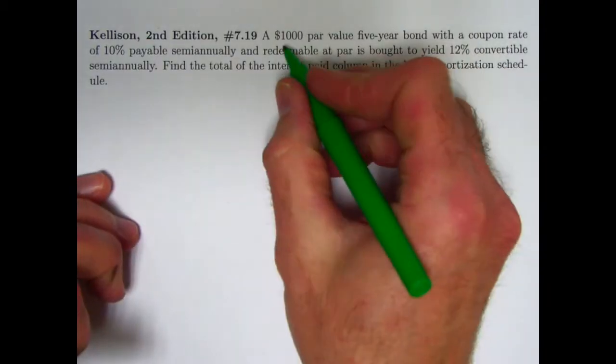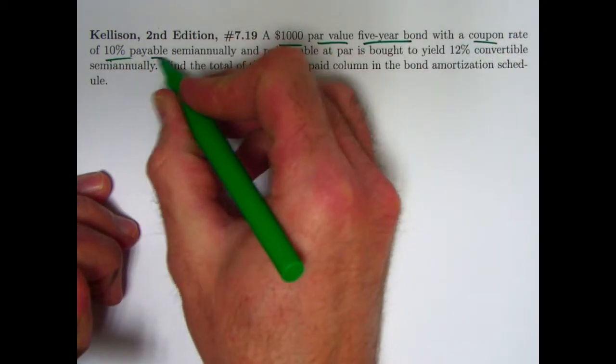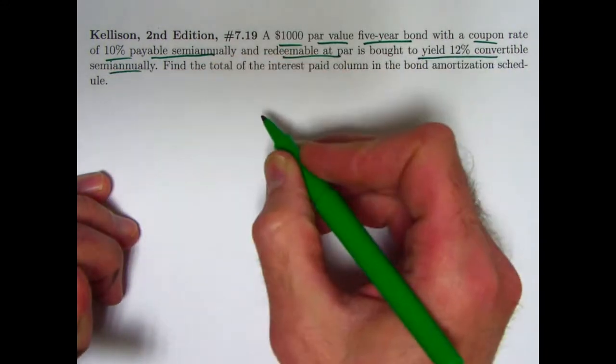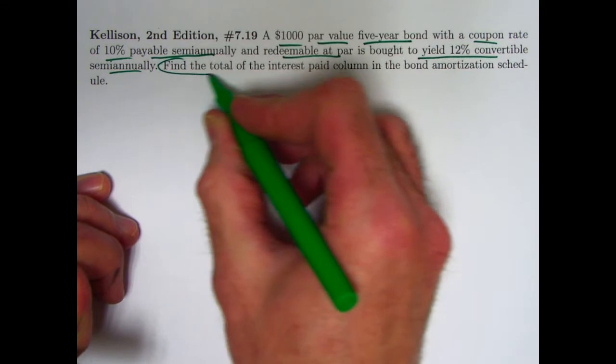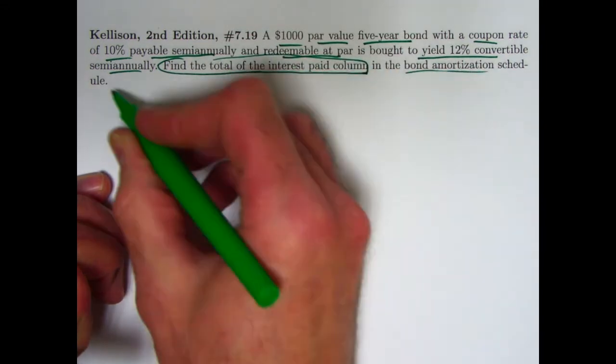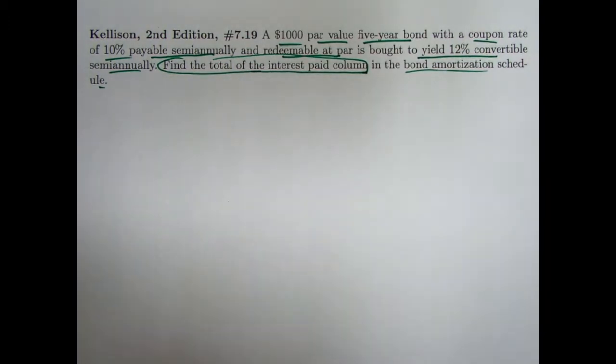So we have $1,000 par value, five-year bond with a coupon rate of 10% payable semi-annually, redeemable at par, bought to yield 12% convertible semi-annually. We'll be finding the total of the interest paid column in the bond amortization table, but we will not have to construct the whole table. In fact, there's a relatively easy way to solve this problem if your conceptual understanding of what goes on with bonds bought at premiums and discounts is real solid.